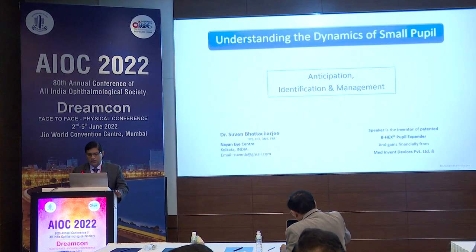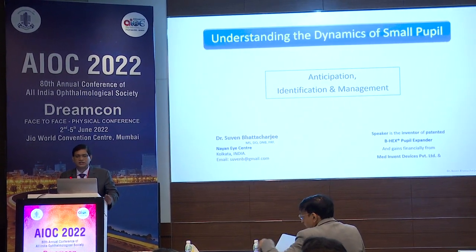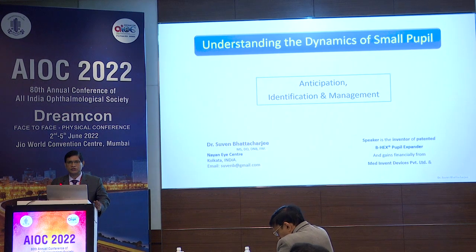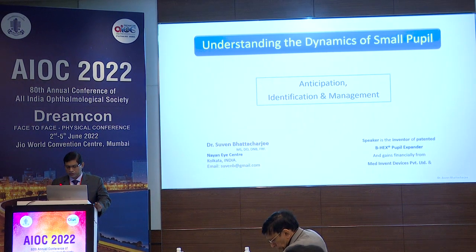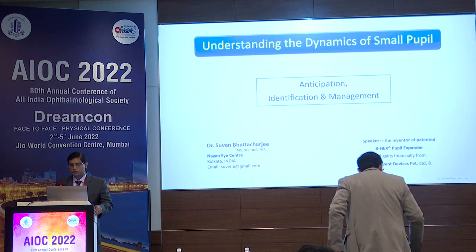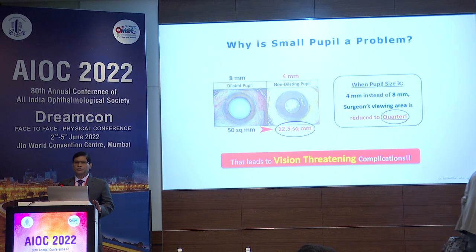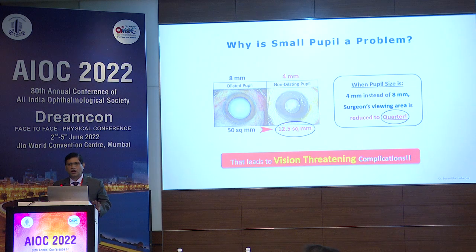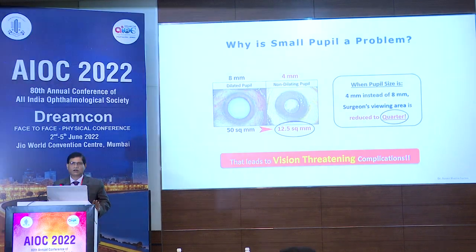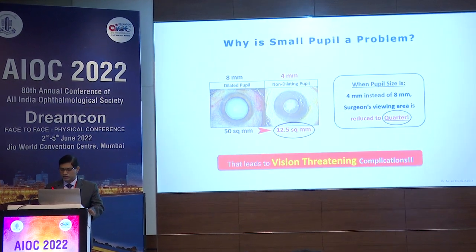I am going to talk about understanding the dynamics of small pupils. It is all about anticipation, identification, and management. I do have a financial interest in the BX Pupil Expander. When the pupil size comes down to half, the viewing area for the surgeon is reduced to a quarter — this is elementary geometry. If the surgeon cannot see the capsular margin, they cannot operate safely.